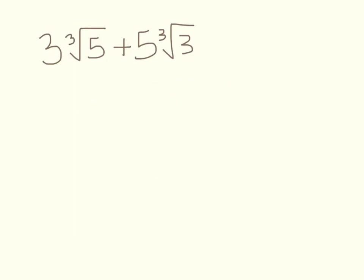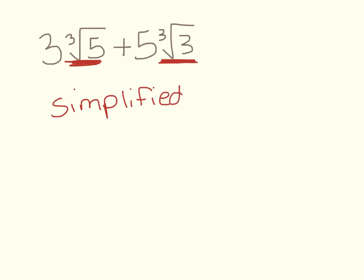If we have 3 cube roots of 5 plus 5 cube roots of 3, these are not the same radicals. Like 3x plus 5y — they're different and can't be combined. So this expression is already fully simplified.